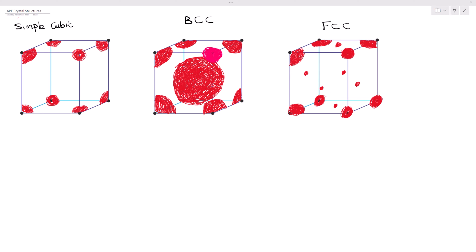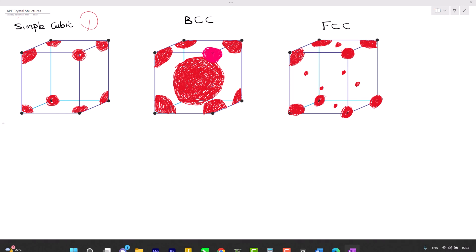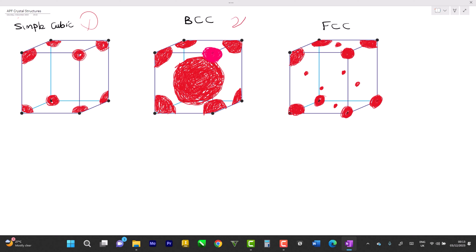Alright, so guys, in this video I'm going to be showing us how to count the number of atoms in each cubic crystal structure. Right here for number one we have the simple cubic, number two we have the body-centered cubic, number three we have the FCC.